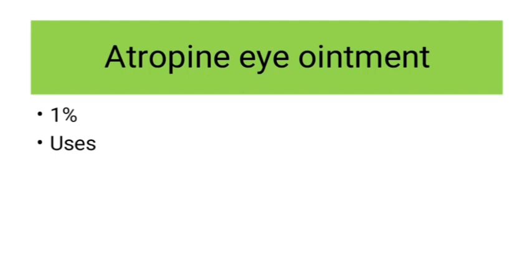You should know the actions of atropine in uveitis — it will prevent the formation of synechiae, it will break synechiae which are already formed, and it will increase the blood supply. The next eye drop is homatropine eye drops which comes in 2% form, used for cycloplegic refraction in 5 to 8 years of age. The cyclopentolate eye drops comes in 1% and is used in the 8 to 20 years age group for cycloplegic refraction.